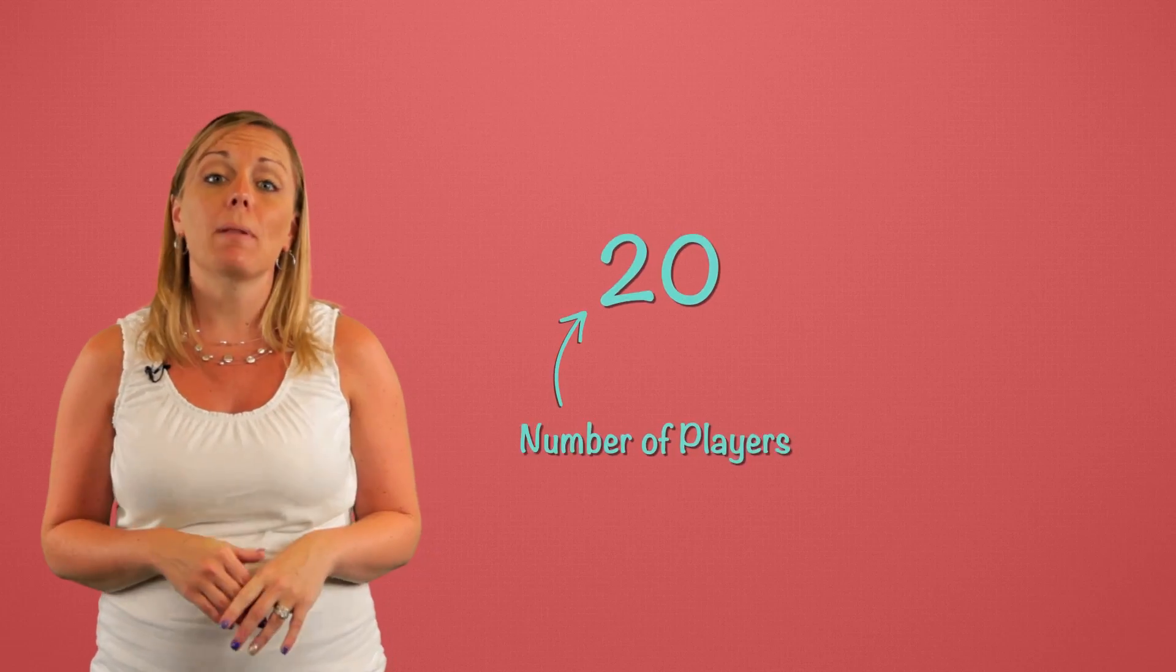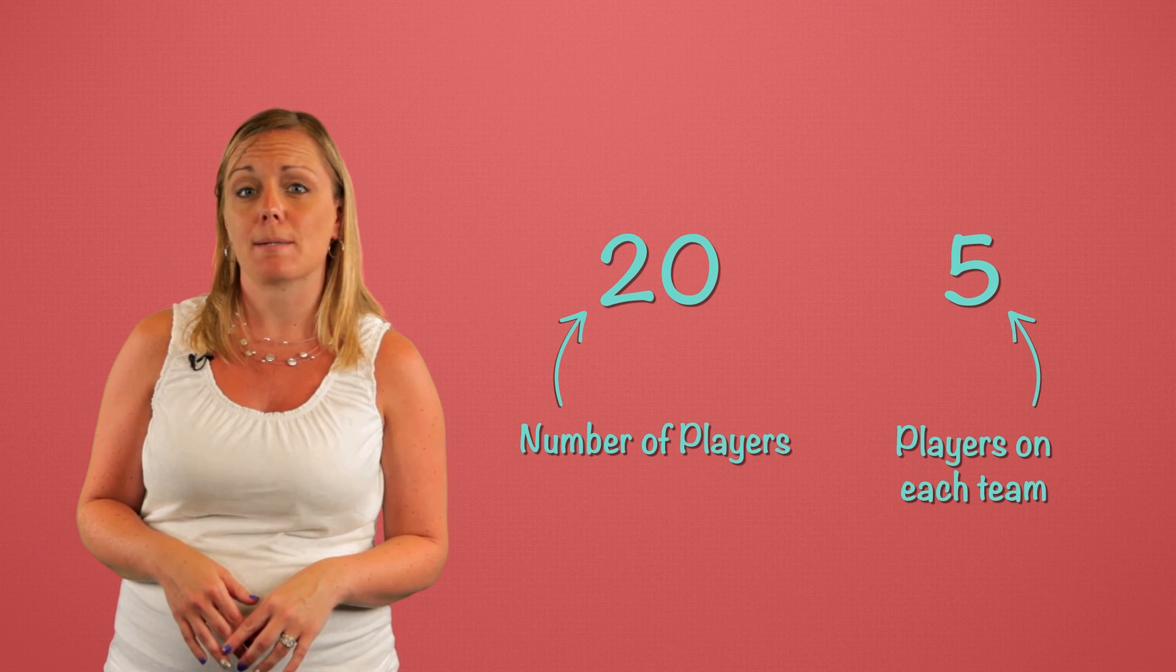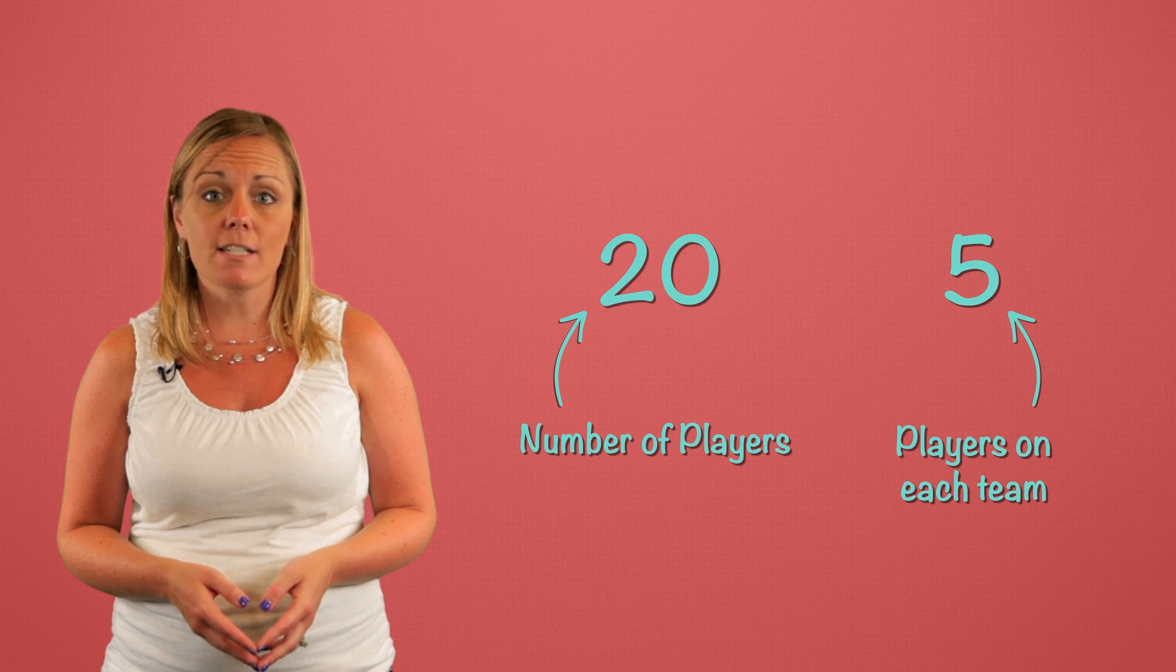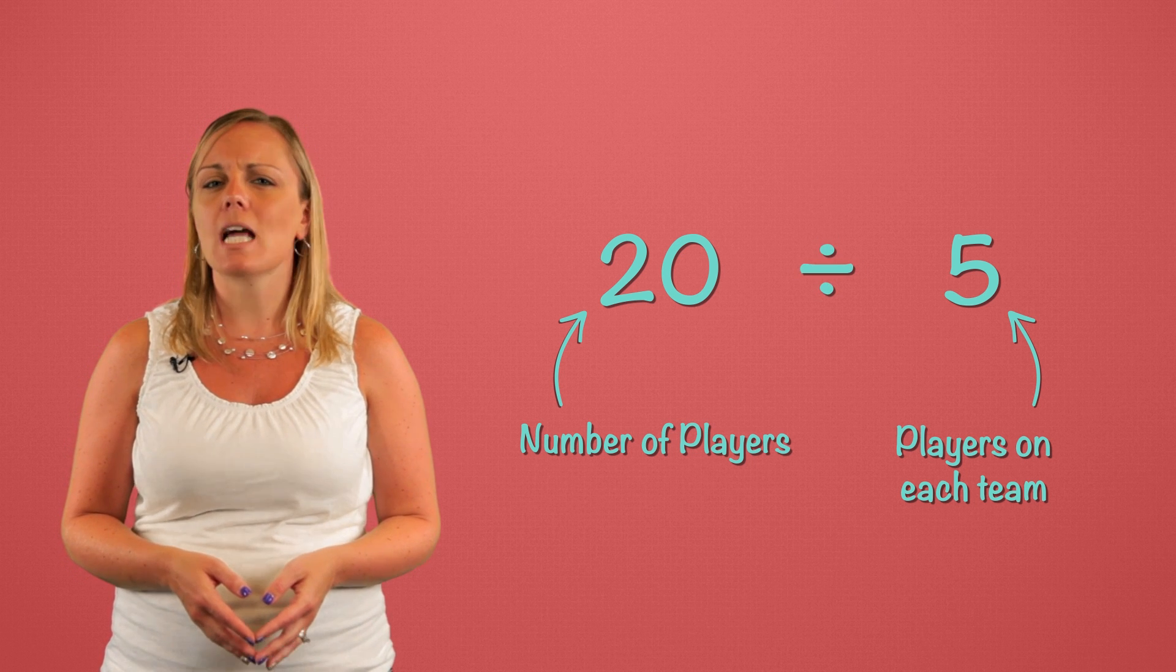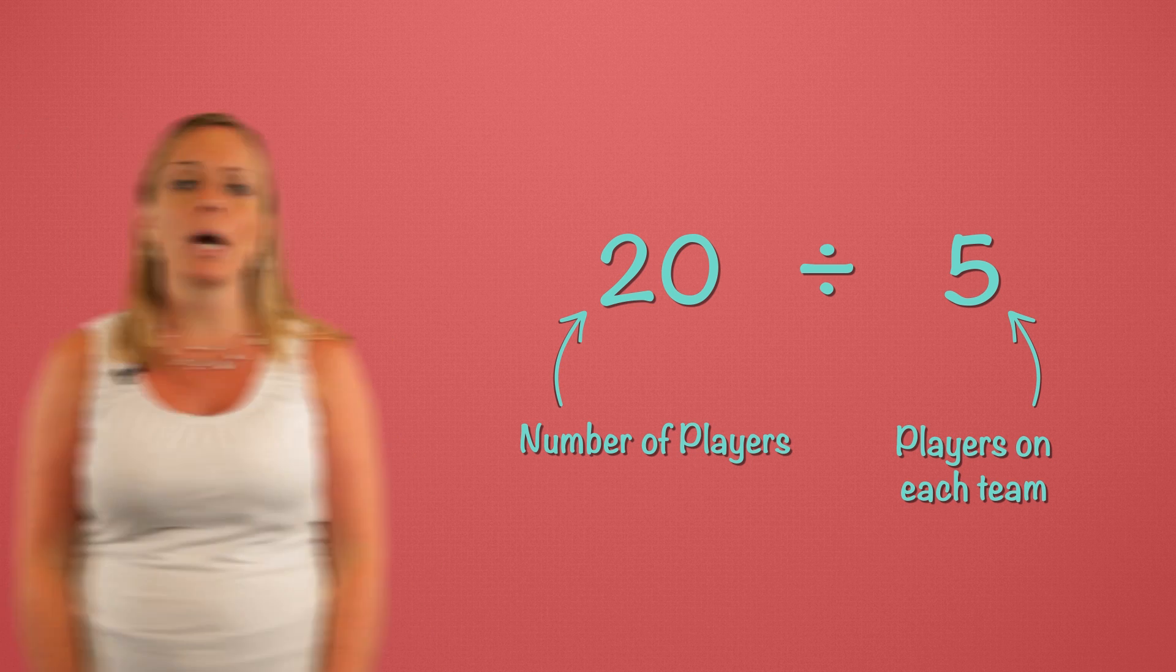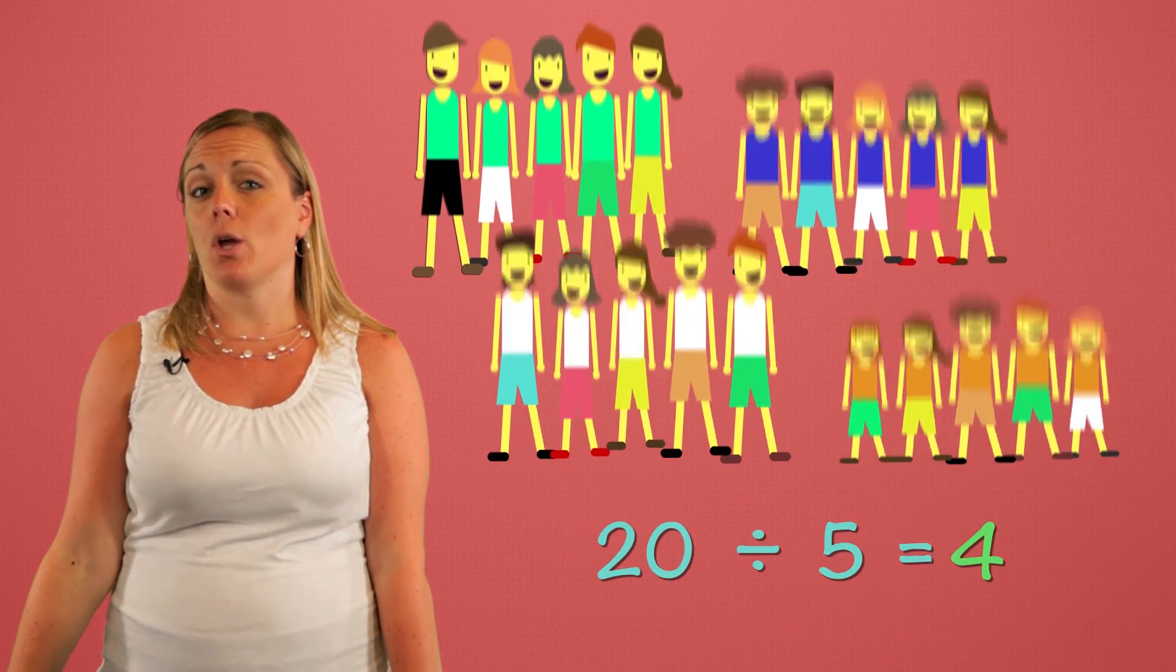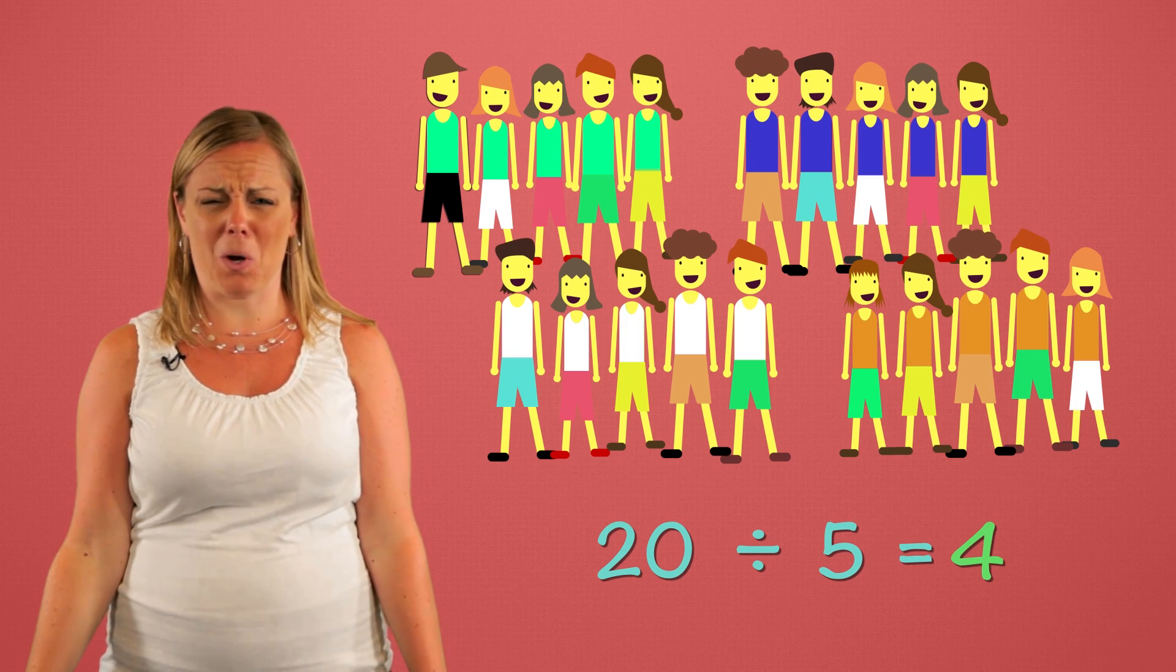We have 20 players in the gym and I know there's five players on each basketball team. So that's 20 divided by 5. What does 20 divided by 5 equal? 20 divided by 5 equals 4. We'll have four teams. Ew, and 20 showers.